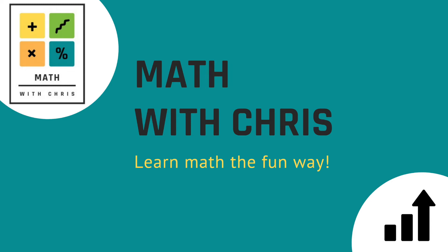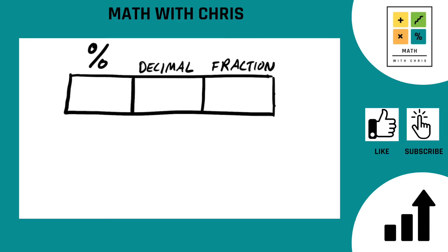What's going on everybody? Math with Chris. More converting here and we're starting with fractions, working our way back to find the percents and decimals. The fraction we're going to look at in this video is 7 20ths.